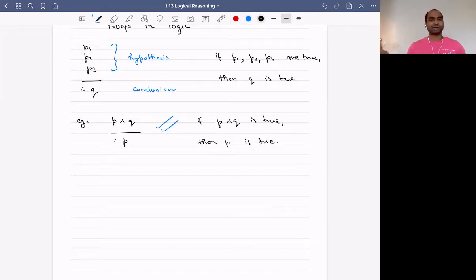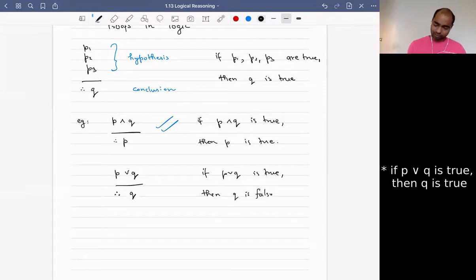A proof in logic is also called an argument, but really, because you're mathematicians, stick to proof. Let's do this one. If P or Q is true, then Q is true. This is unfortunately not true. So this is not a valid argument or not a valid proof. And how do you test it?